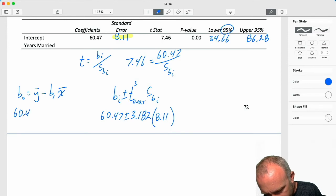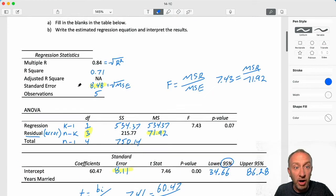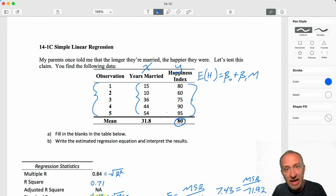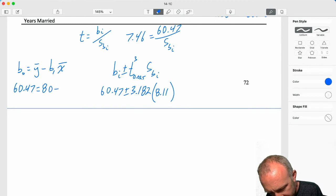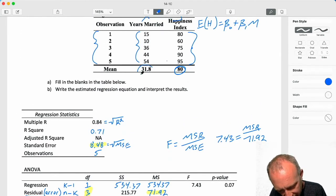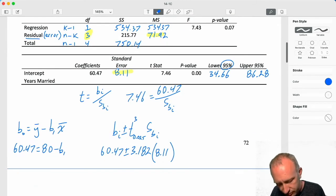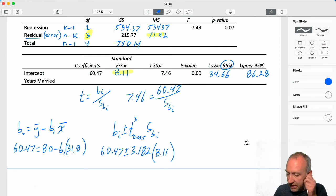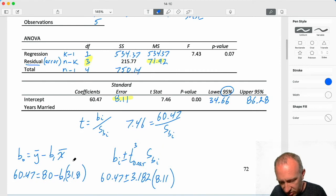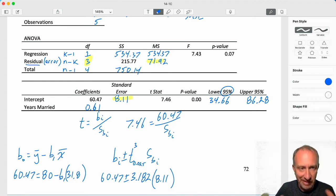So, I have that intercept, 60.47, I have y bar, the average value of y, here is 80, minus b1, and x bar, I have that here, is 31.8. And, so now I can solve for the slope. 60.47, minus 80, divided by 31.8, and that gives me my coefficient of 0.61. Much faster than calculating all of those squared differences, that whole formula for that slope.